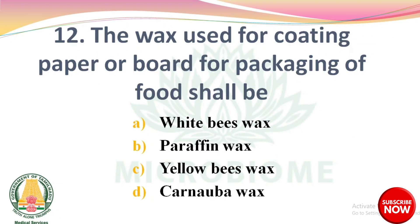Question 11: The wax used for coating paper or board for packaging of food shall be — options: white beeswax, paraffin wax, yellow beeswax, carnauba wax. The right answer: option B, paraffin wax.